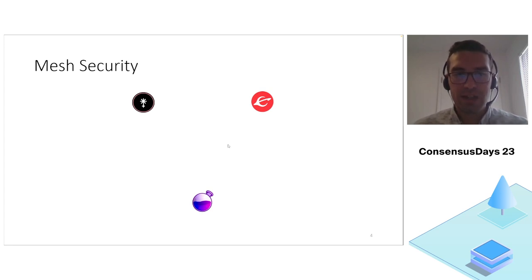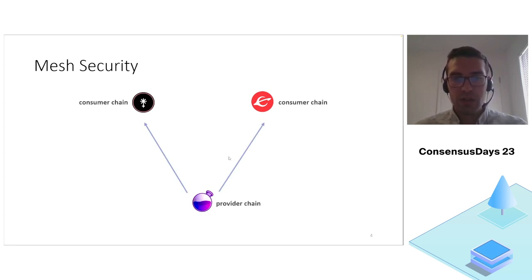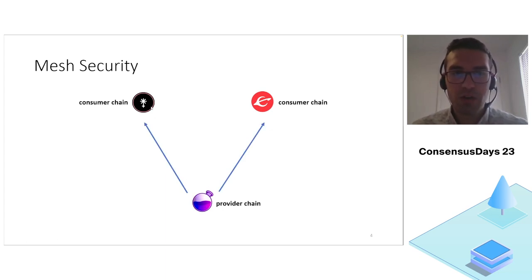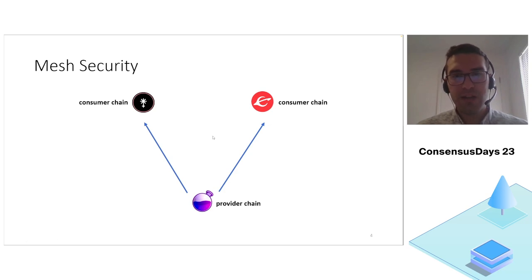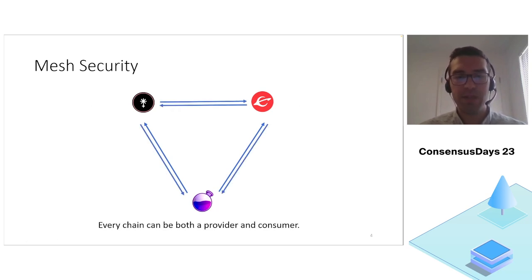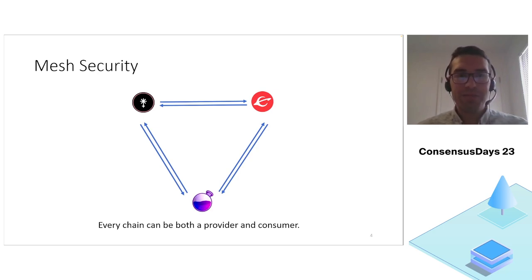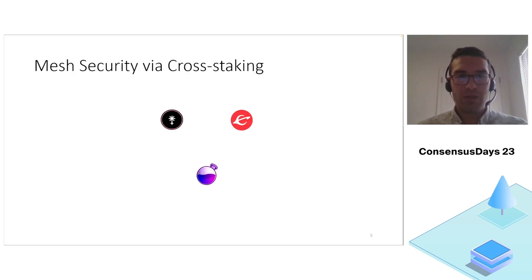In mesh security there are two roles that can be assumed by any proof of stake blockchain. A chain can either be a provider chain that provides economic security — these arrows show the flow of economic security — or a chain can be a consumer chain which borrows or enhances its own economic security with the help of the provider chain. Mesh security states that we don't need to have hierarchies; instead every chain can be both a provider and a consumer chain.